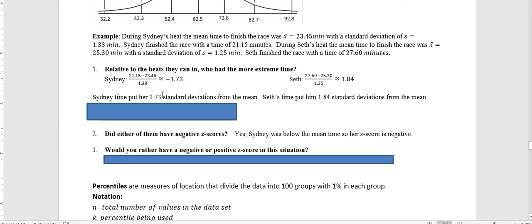Seth's was his time, 27.6, minus the average, which is 25.3, divided by standard deviation. His is 1.84. Seth's time put him 1.84 standard deviations from the mean. So Seth has a more extreme time relative to his heat.